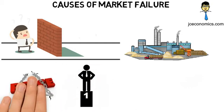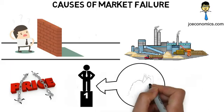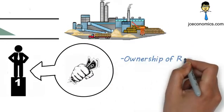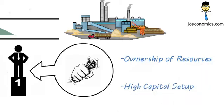Thus, demand is more price inelastic and the firm has greater market power in influencing its price. An example of barriers to entry is the ownership of resources or having a high capital setup cost.